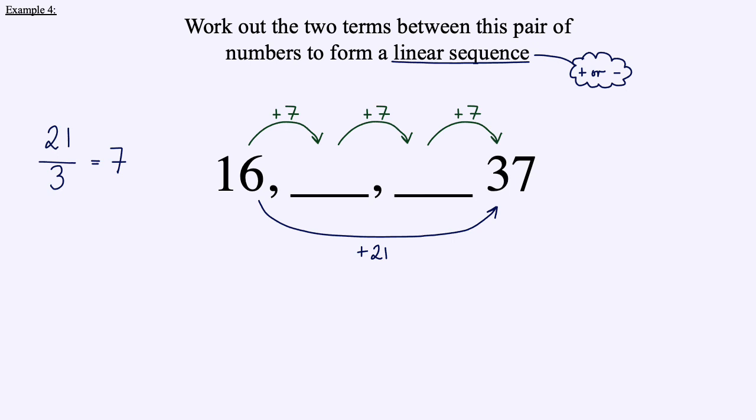We added 7, then 7 again, then 7 again to reach 37. So 16 plus 7 is 23, 23 plus 7 is 30, and 30 plus 7 is indeed 37. By understanding that it's a linear sequence and looking at the jumps between terms, we've been able to find the missing terms. Feel free to rewind if you'd like to watch that again.